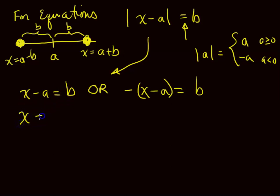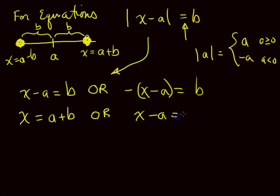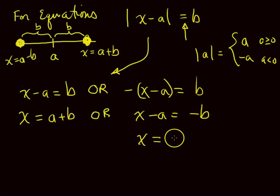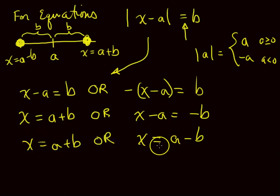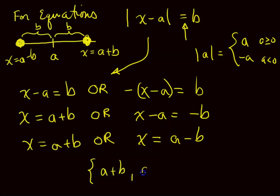When you solve this, you can see right away that adding A to both sides gives you A plus B. Or, you can also write the second case as X minus A equals the opposite of B. So either X minus A equals B, or X minus A equals negative B. Then X equals A plus B, or X equals A minus B. That's how you solve these, and your solution set in roster notation is just those two answers.